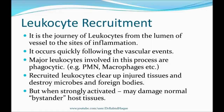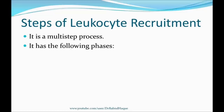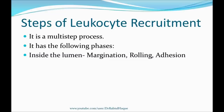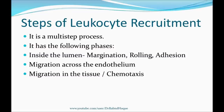Leukocyte recruitment is a multi-step process with several phases. Some phases occur inside the lumen of the blood vessel — they include margination, rolling, and adhesion. Then some phases occur when the leukocyte migrates across the endothelium and vessel wall. The last phase occurs during migration in the tissue towards a chemical gradient, also known as chemotaxis.